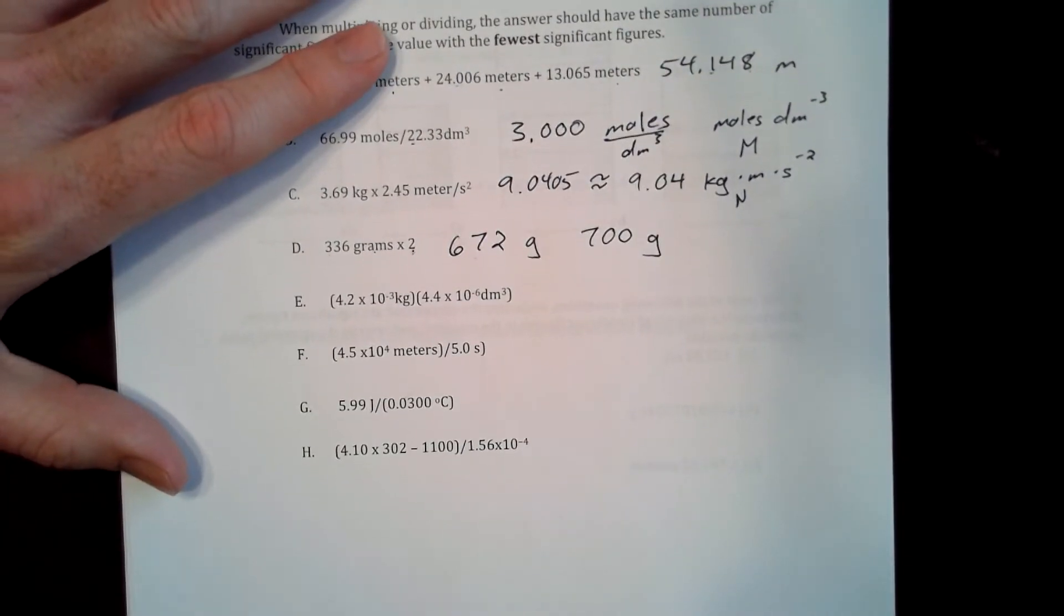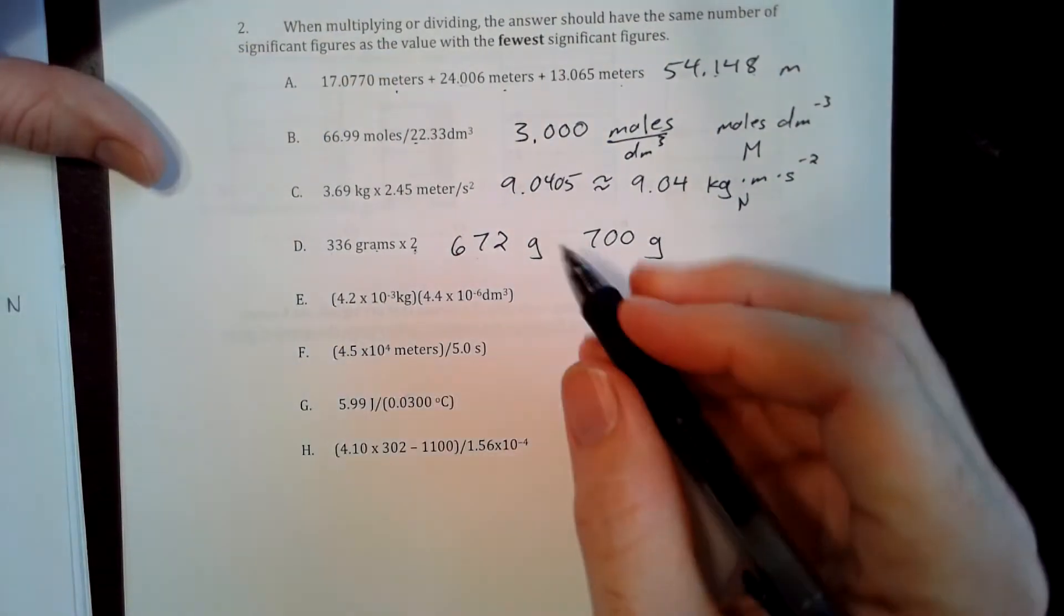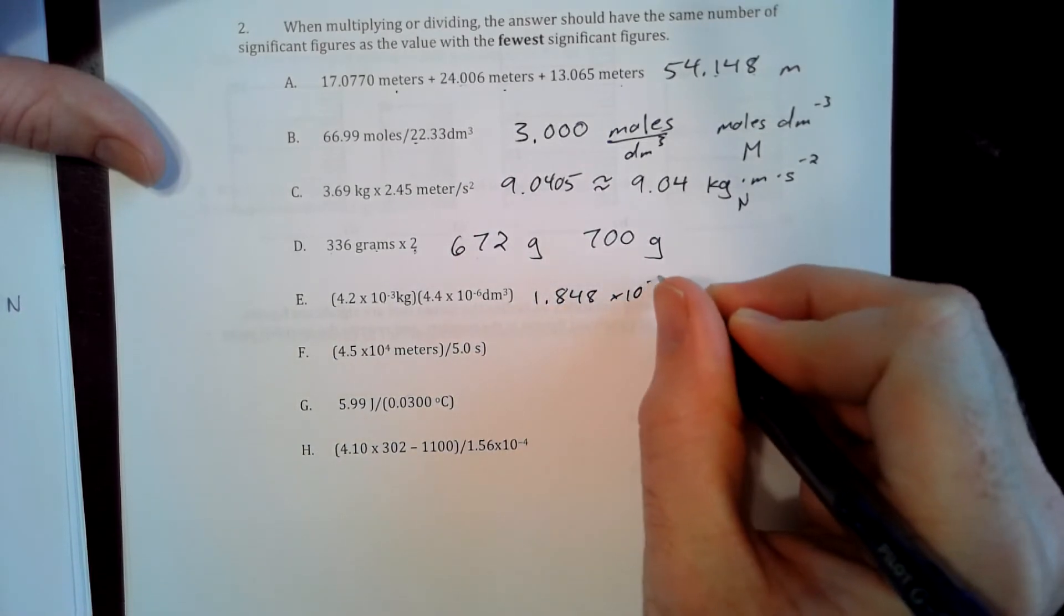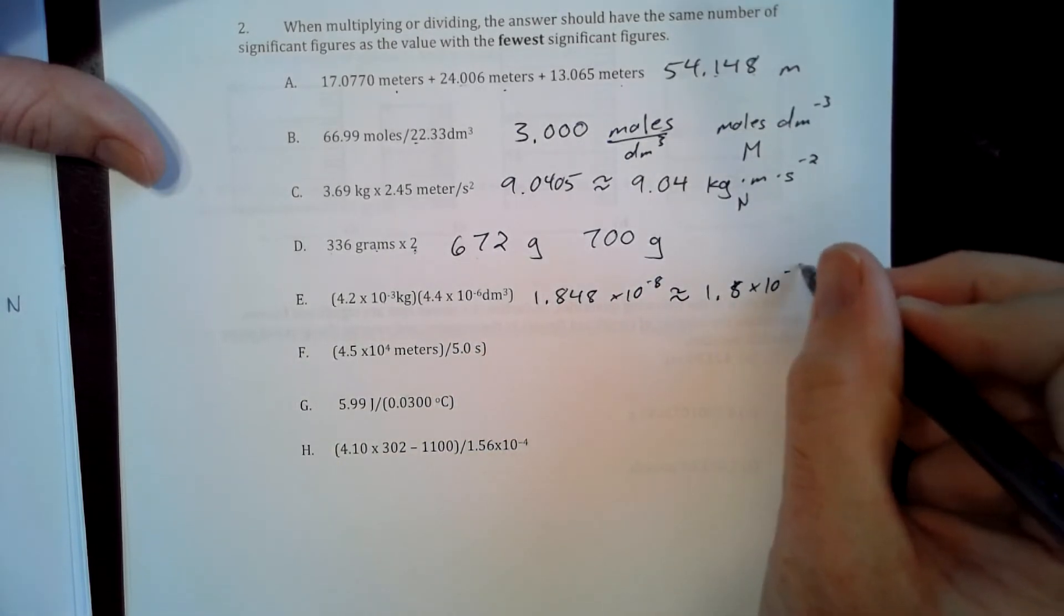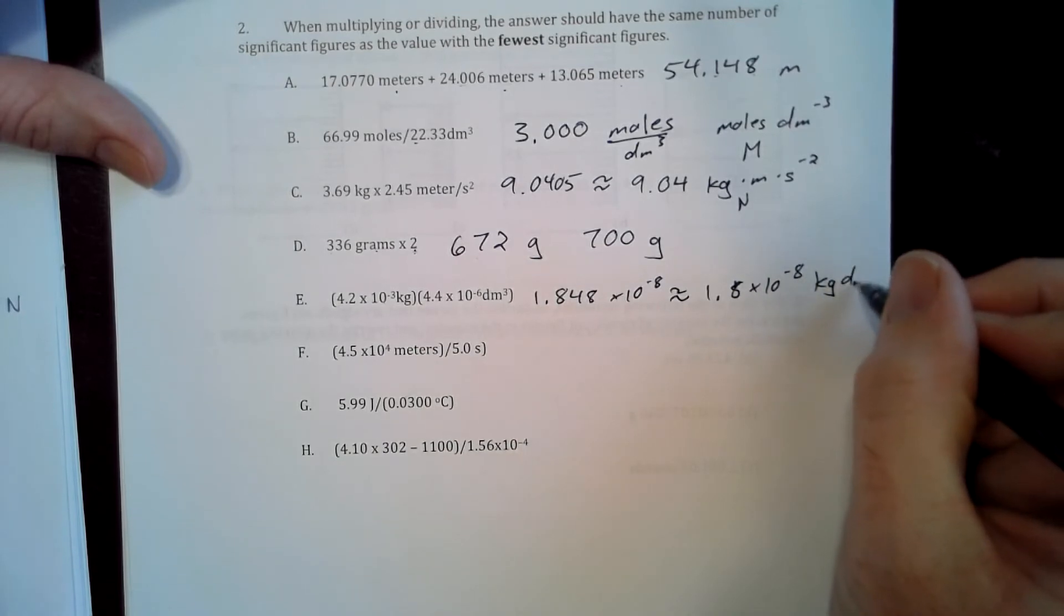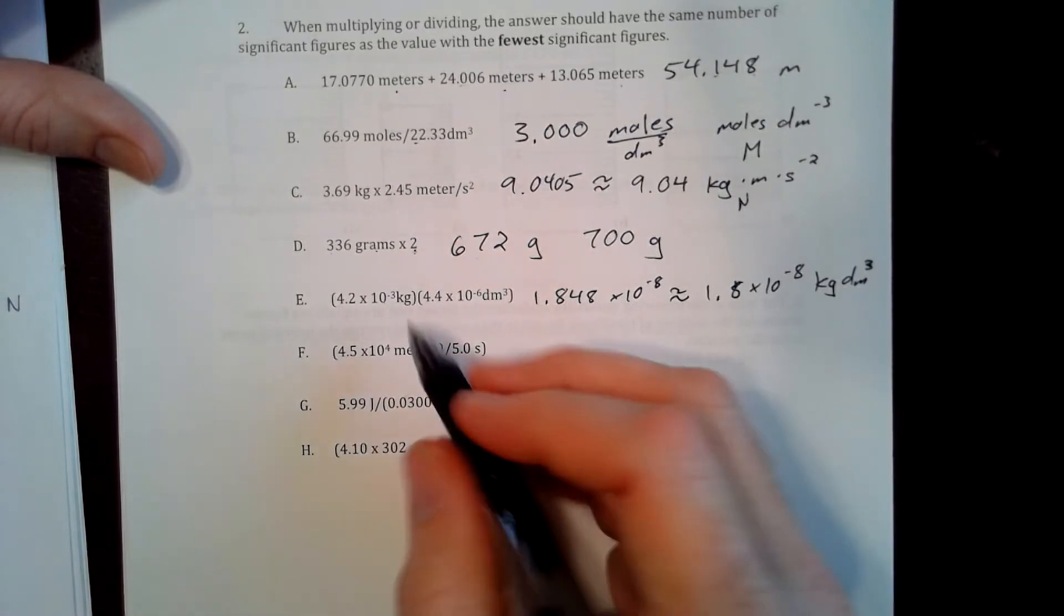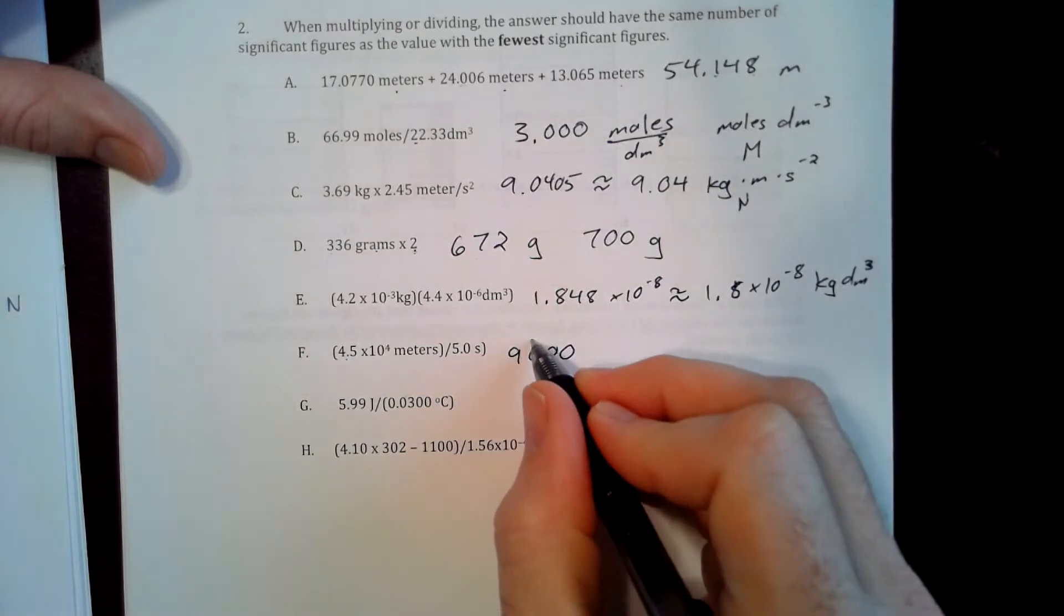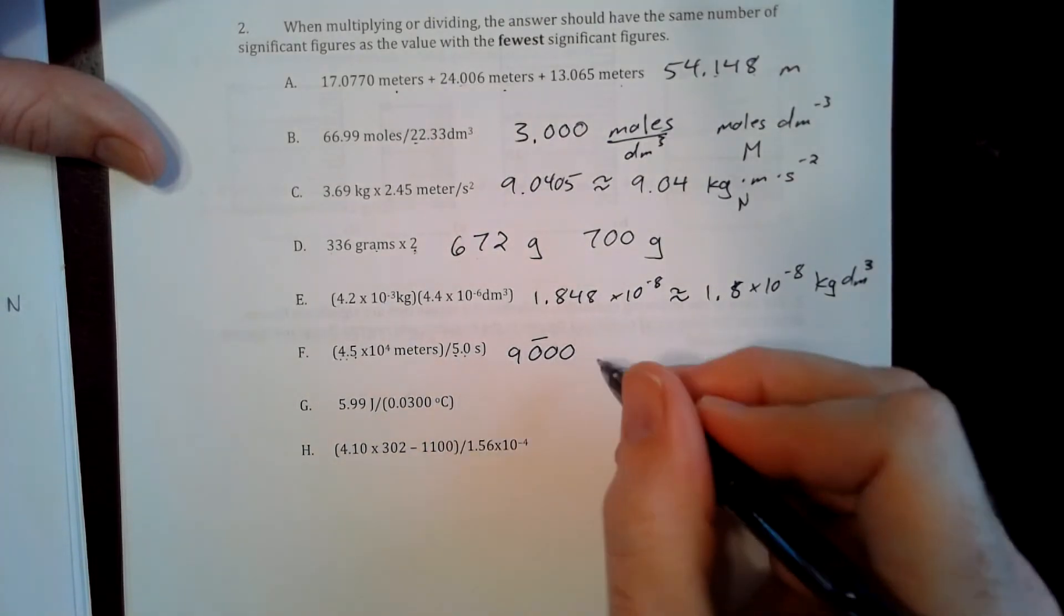So in this one, we'll do this times this. So that's going to be, the calculator gives us 1.848 times 10 to the minus 8. We'll just approximate that to 1.8 times 10 to the minus 8 kilograms times decimeter cubed. And then we have this right here. This times this. So we're going to get 9,000 with two sig figs. There's two sig figs here, two sig figs here. And that's going to be meters per second cubed. Notice I'm using the least number of sig figs.